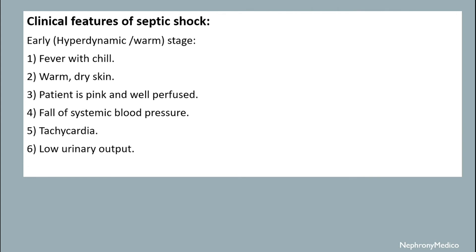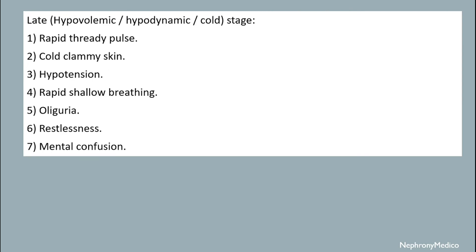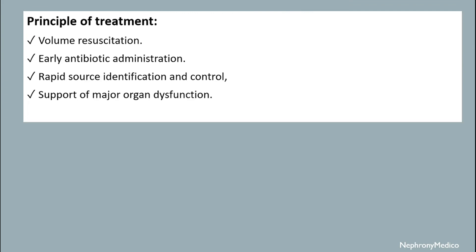Clinical features of septic shock: early stages include fever with chills, warm dry skin, patient is pink and well perfused, fall in systemic blood pressure, tachycardia, and low urinary output. The late stage includes a rapid thready pulse, cold clammy skin, hypotension, rapid shallow breathing, oliguria, restlessness, and mental confusion.